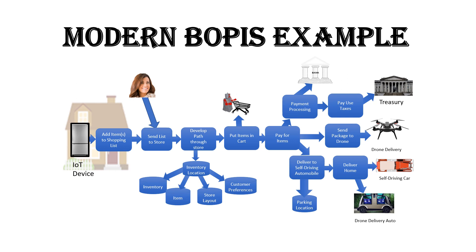When it has what your shopping list wants, it then moves to being paid for the items. The payment moves to the payment processing system, which sends money to the bank or gets authorization from the bank. And it splits off the sales and use tax to be sent off to the treasury.